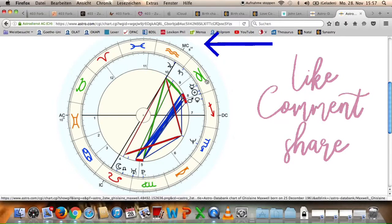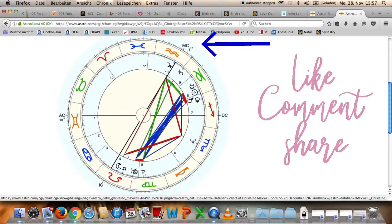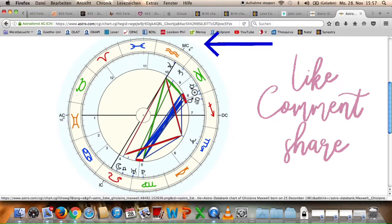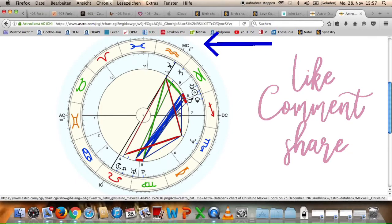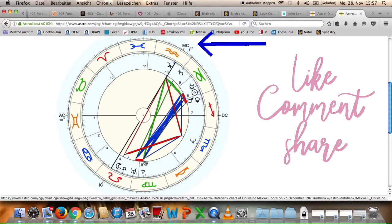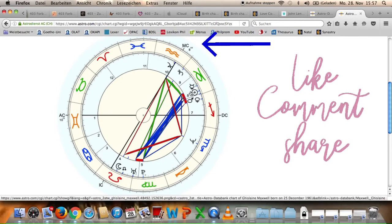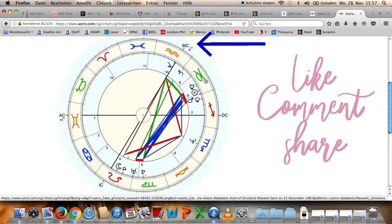Something that confuses me a little bit, I have to say, is we have a lot of trining energy here. To Pluto and to Uranus. I would have expected there to be more squares. But also those trines to Pluto, Pluto is connected to the eighth house, which would make her way of thinking even more radical.